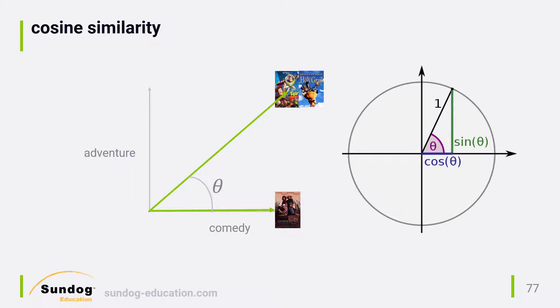What if a movie is completely unlike another? Let's throw in a movie, Indiana Jones, which is an adventure, but not a comedy. So it has nothing at all in common with Grumpy Old Men as far as genres are concerned. What's the angle between Indiana Jones and Grumpy Old Men in this case? It's 90 degrees, and the cosine of 90 degrees is? You guessed it, 0. So we get a cosine similarity score of 0 between Indiana Jones and Grumpy Old Men.